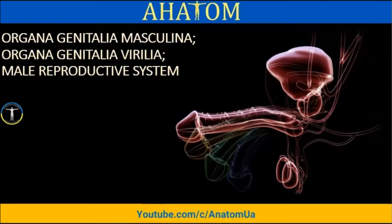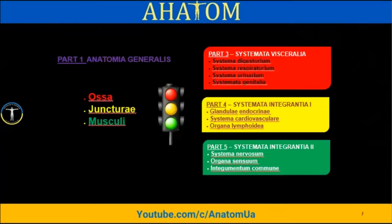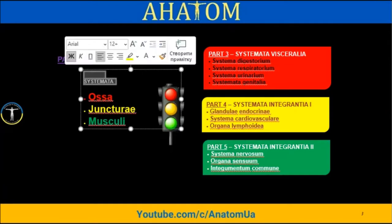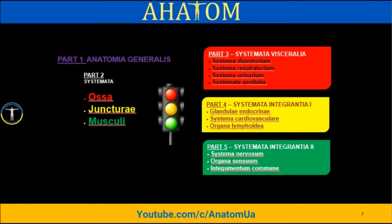It's a reproduction, and you remember the main five parts of human anatomy. The first part is general anatomy — it's about words, regions, and some structures in the human body. The second part is the locomotor apparatus, or musculoskeletal system: bones, joints, and muscles. This part is important for understanding the location of different organs in the human body.